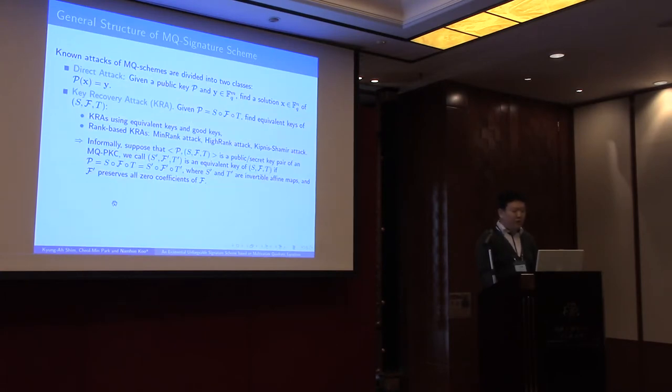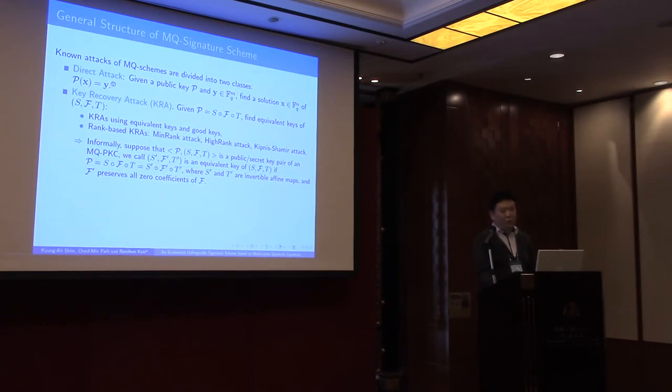I explain about the security analysis of our scheme against the known attacks of MQ schemes. These attacks are divided into two classes. The direct attack is to solve the multivariate system from public key P. Key recovery attack is an attempt to find equivalent keys of a secret key. Key recovery attack using good key is a generalization of rainbow band separation attack. And there are several well-known rank-based key recovery attacks.